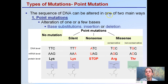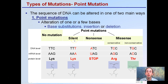The sequence of DNA can be altered in one of two main ways. The first is point mutations — an alteration of one or a few bases, which can be a base substitution, insertion, or deletion. The normal DNA level reads TTC. A silent mutation occurs when TTC becomes TTT. Notice that it does change the mRNA level, but because of the redundancies that occur, the protein level has not changed — this is why it's called a silent mutation.